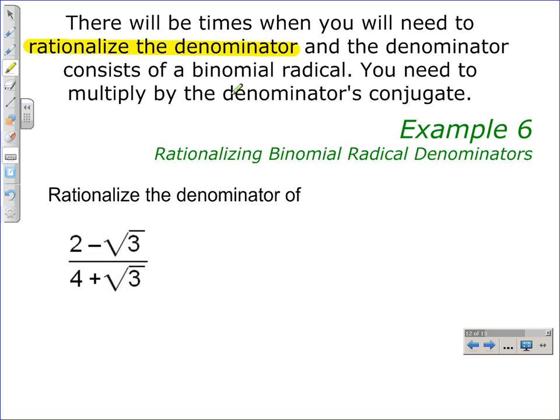To do that, we need to multiply by the denominator's conjugate. We don't just multiply by the conjugate, but we multiply by the ratio of the conjugate over the conjugate.